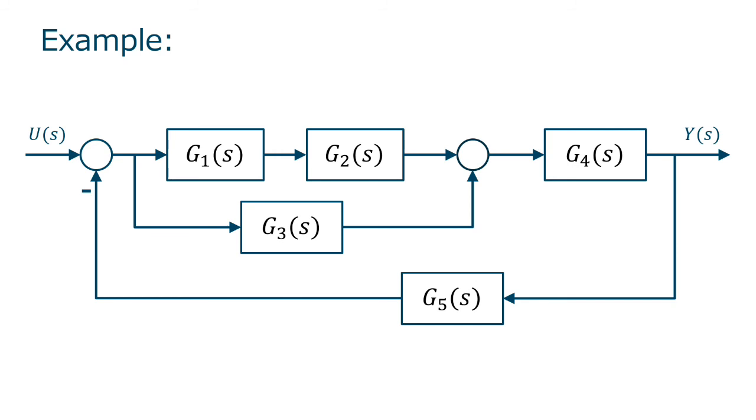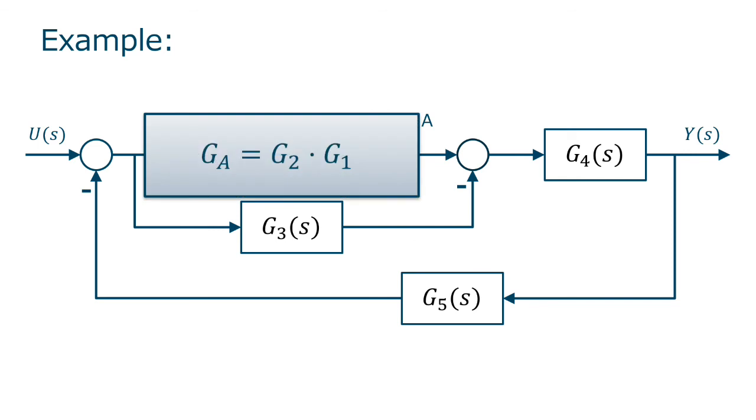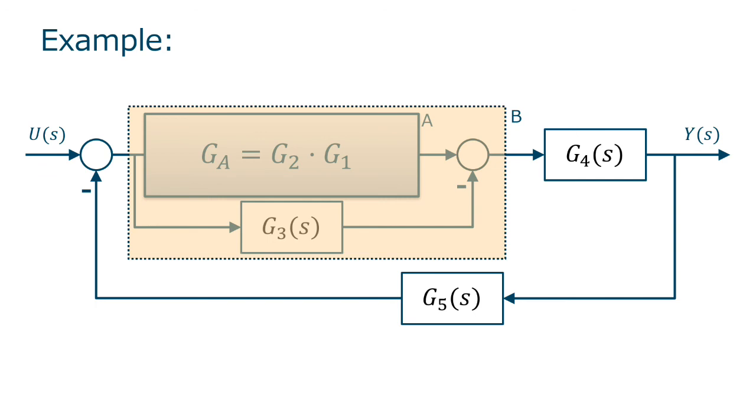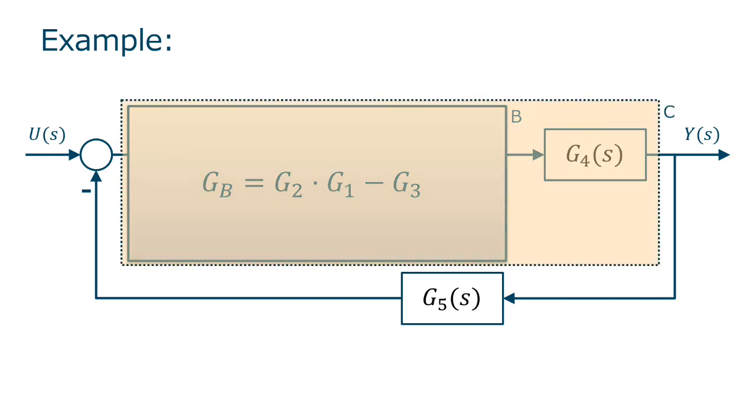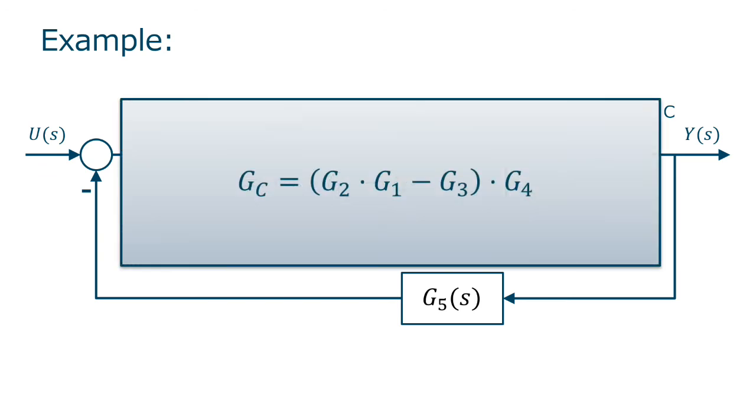So let us see an example. When we approach such a problem, we want to find things that we can simplify. Simplify here means replacing, for instance, a series by its equivalent. If we look at G1 and G2, we notice that these two blocks are in series. So we can replace these two blocks by just one, G2, G1. Now going further, we see that GA, which means G2 times G1, is in parallel with G3, even taking into consideration the minus sign there. So we can replace two blocks by its parallel equivalent, which gives G2, G1, minus G3. And now this result is in series with G4. So identifying this series, we can then replace and compute GC as the product of the previous value with G4.